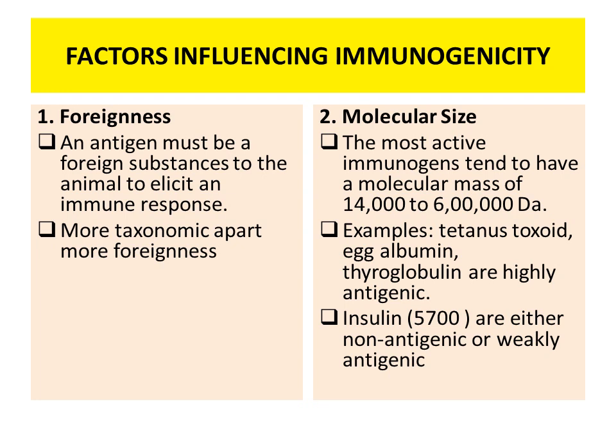Molecular size: the molecular size of the immunogen must be more than 10,000 dalton to induce an immunological response. If the size is small, it will not induce immunogenicity. Most active immunogens tend to have a molecular mass of 14,000 to 6,000 dalton. For example, tetanus toxoid, egg albumin, and thyroglobulin are highly antigenic because they have great molecular mass, whereas insulin having a molecular mass of 700 dalton is either non-antigenic or weakly antigenic.